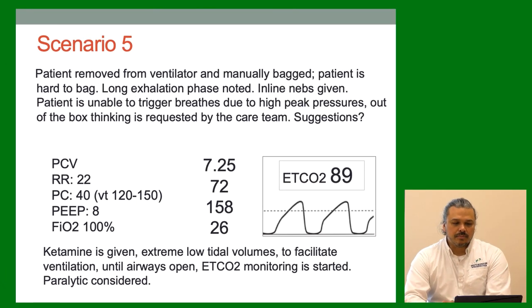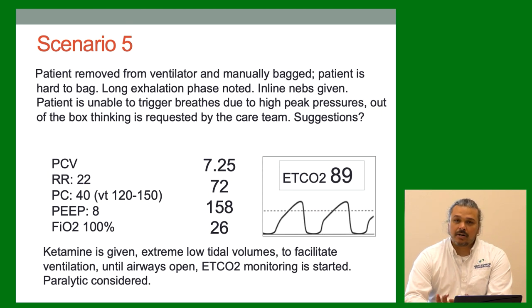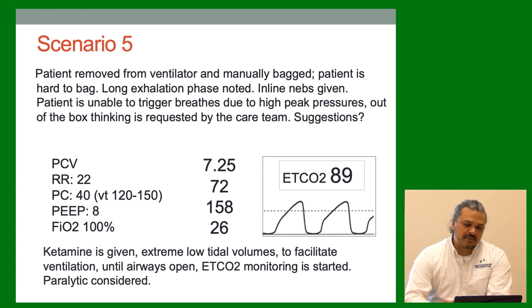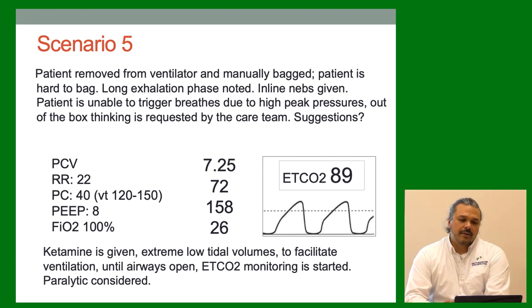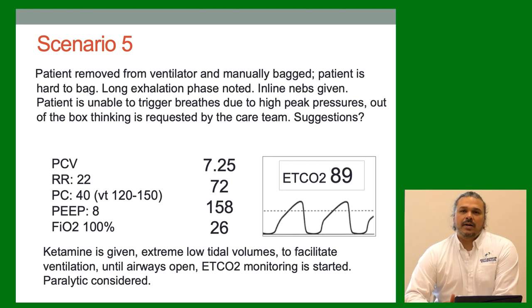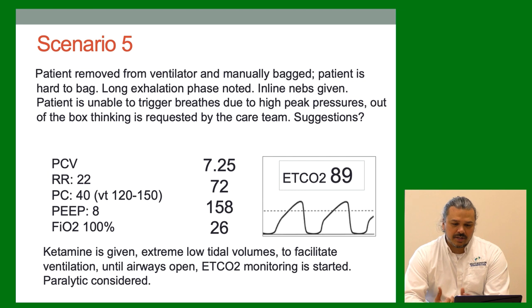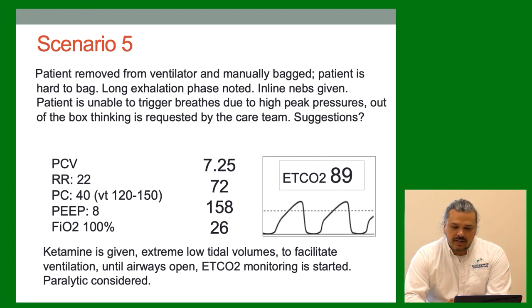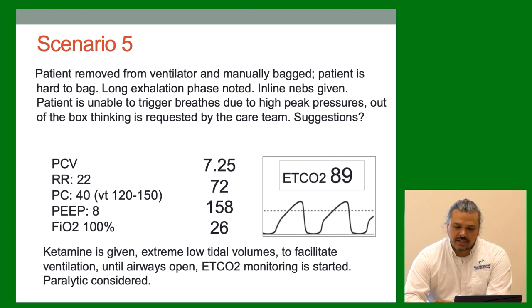Patient is removed from the vent and manually bagged, but is hard to bag with a long exhalation phase noted. Inline nebs given. Out-of-the-box thinking is requested. The approach used: unconventional settings — pressure control 40 on an adult six-foot male — giving tidal volumes of 120 to 150. Yes, these are small tidal volumes, but he's starting to get some consistency. He's starting to trigger the vent and actually move CO2. End-tidal is 80-89. The waveform shows a shark fin pattern indicative of the tight airway.